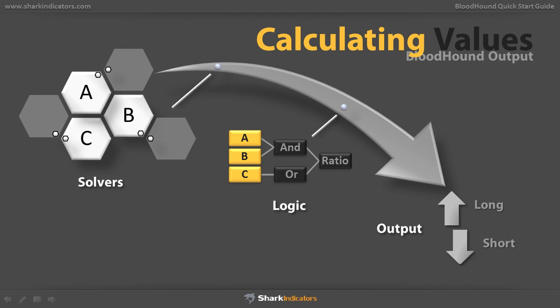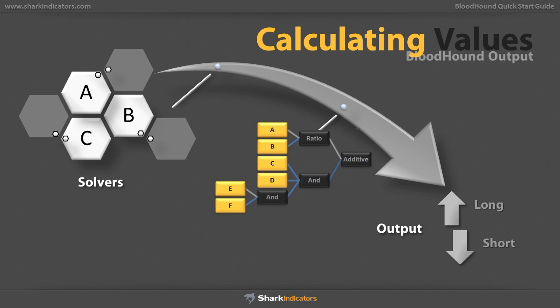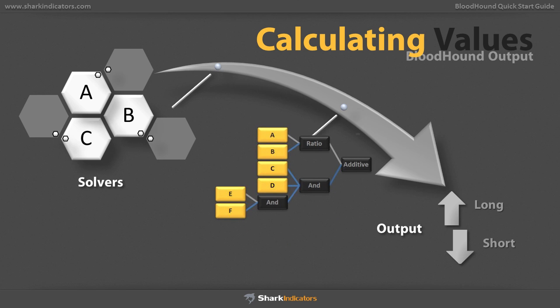As with the solvers, logic templates still evaluate both the long and short side for each bar. The result from the logic template is the output for Bloodhound. Additionally, Bloodhound allows you to define as many logic templates as you like, allowing you to swap between them on the fly as you see fit.